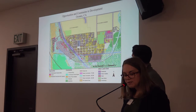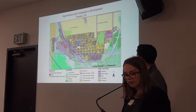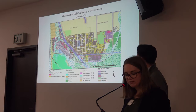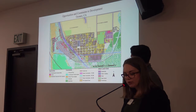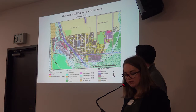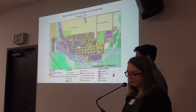This map combines both the constraints and opportunities into one graphic, which helped guide the development of the alternatives. Surrounded by agriculture and its neighboring cities, Oceano doesn't have much room for expansion. However, there are opportunities for growth within the community.